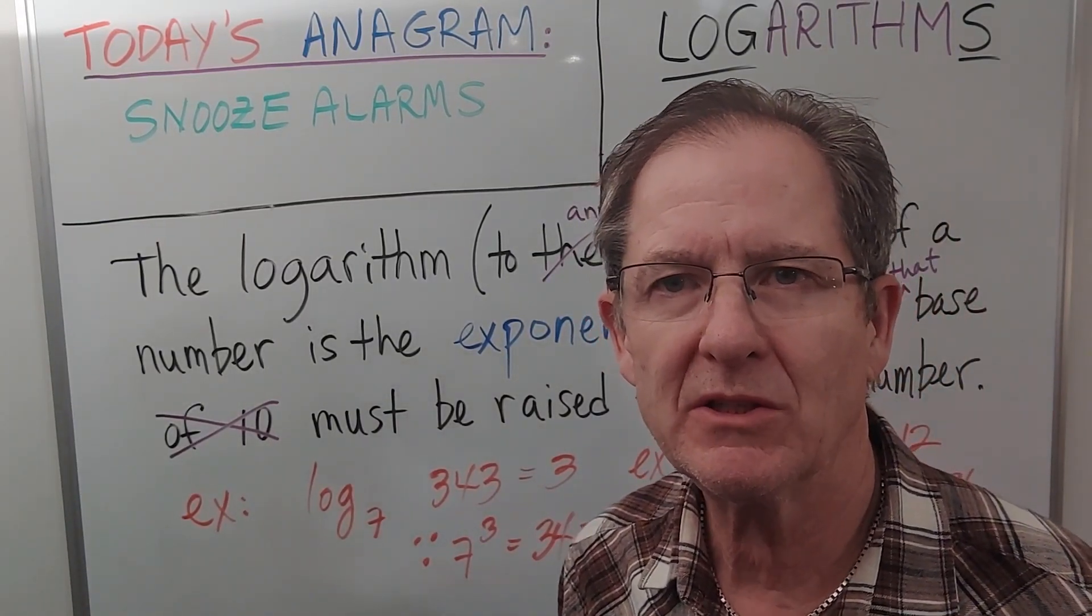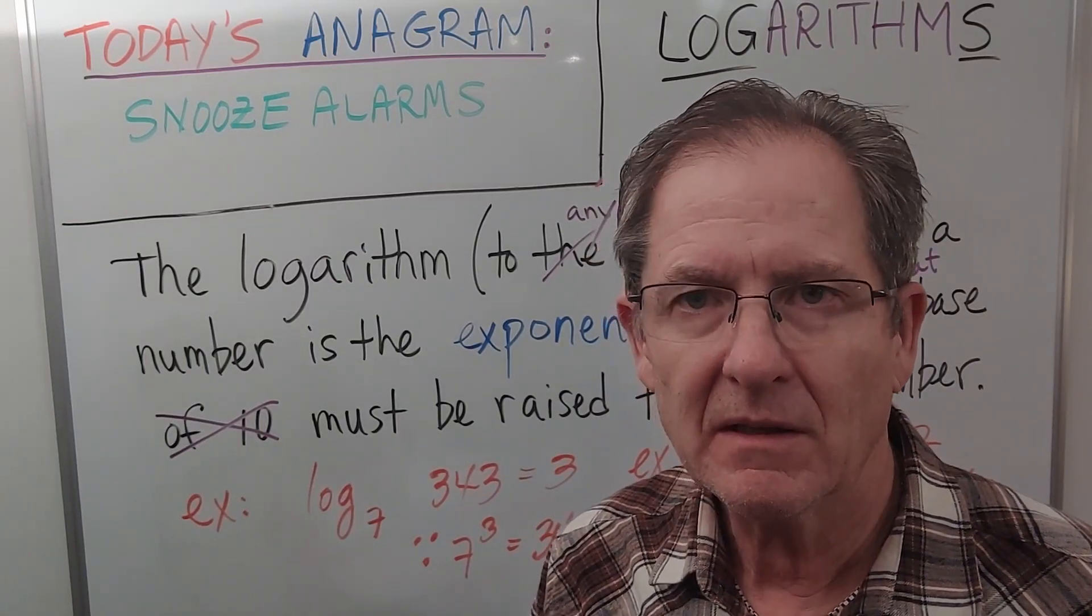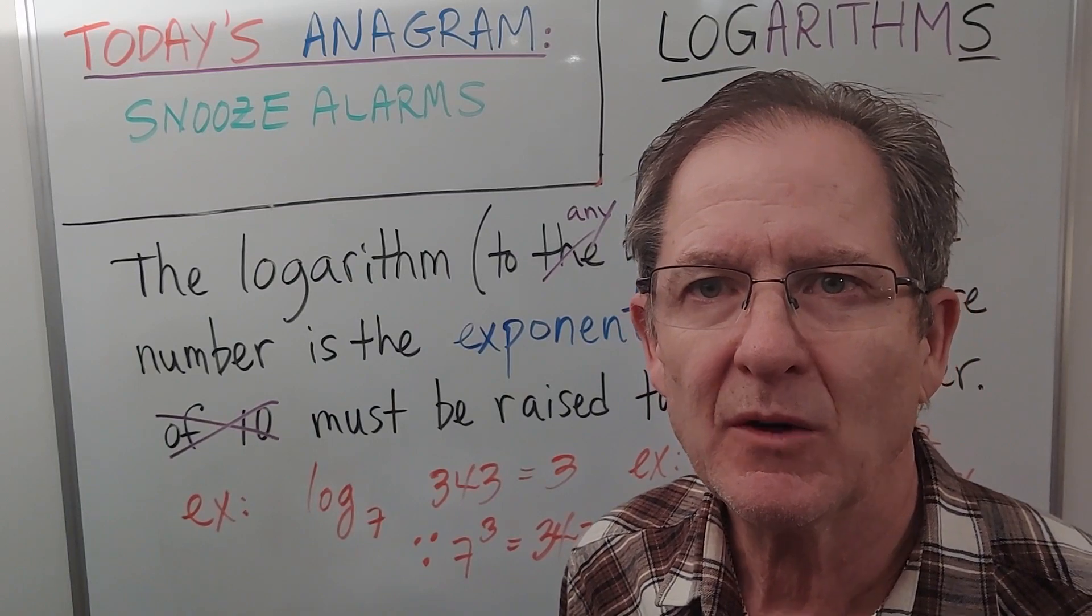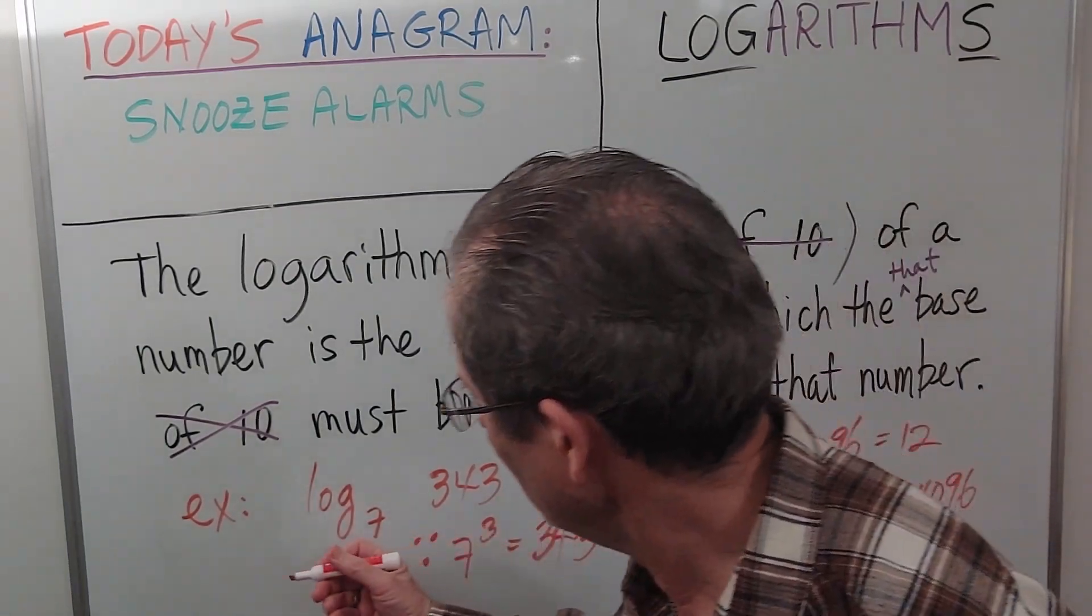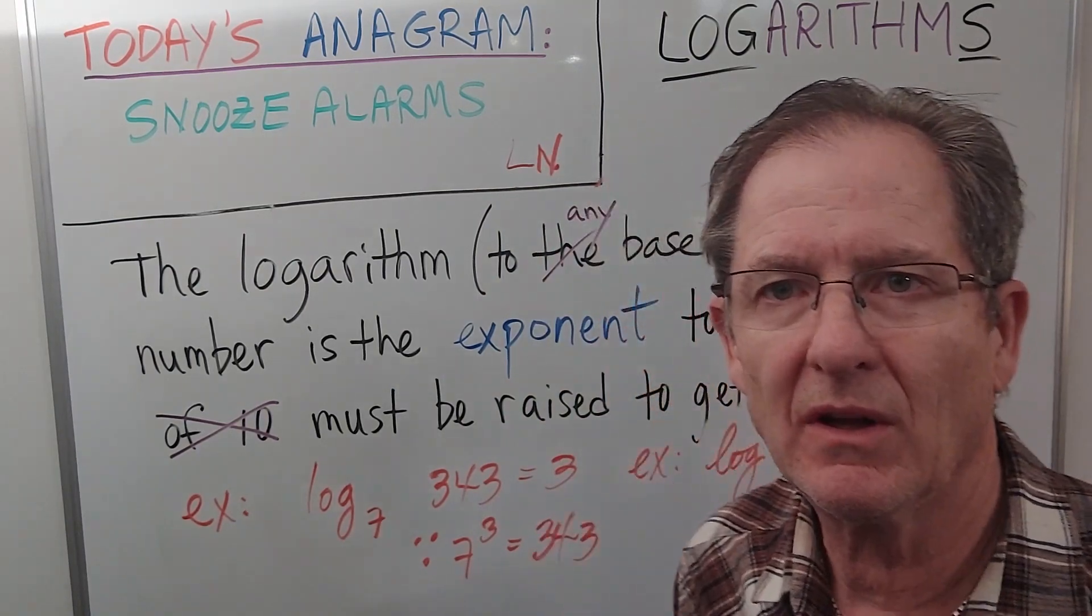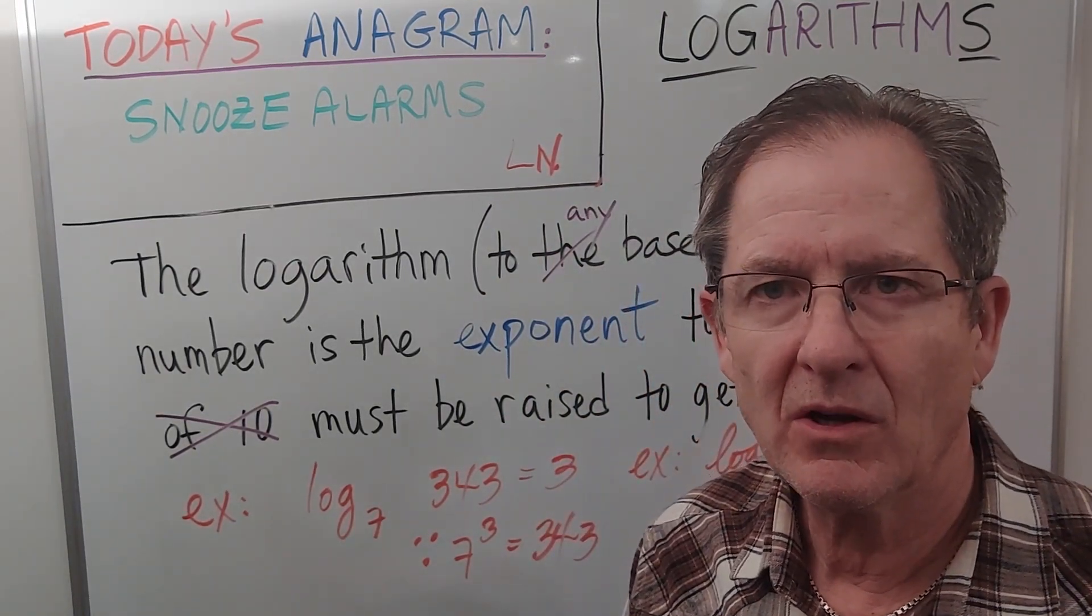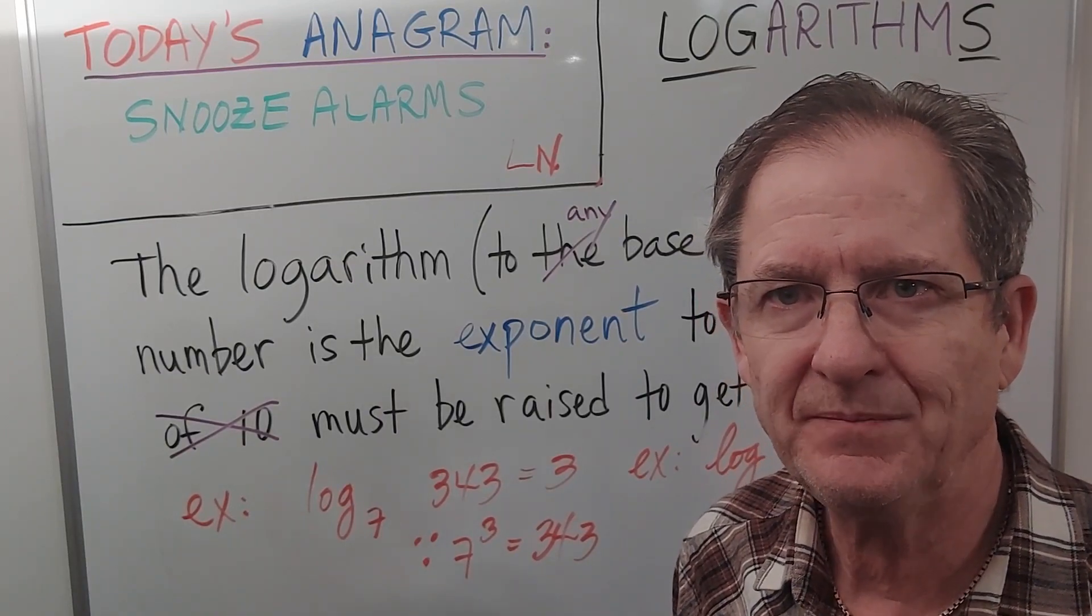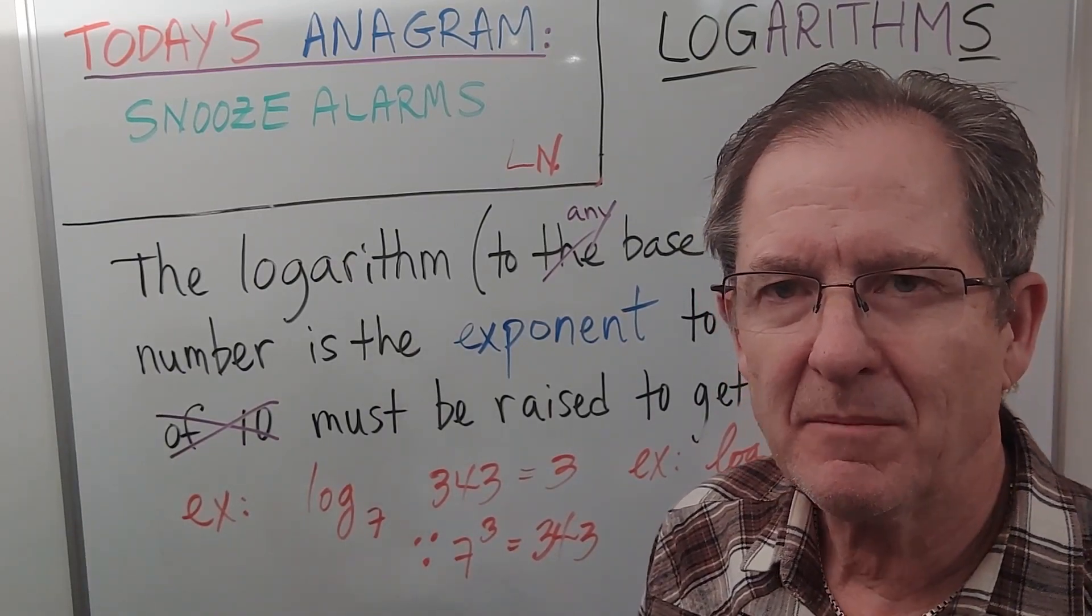Now on your calculator there's probably only two log buttons. One which says log, which is to the base 10, and one which says ln, which is the natural log, or logarithme naturel in French. That's where the ln comes from. That's to the base e.